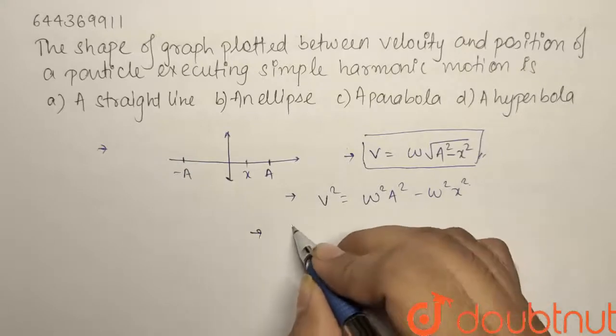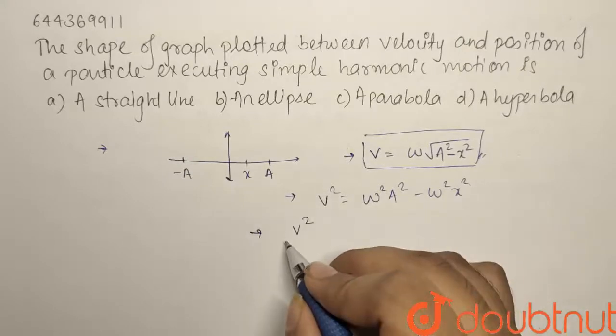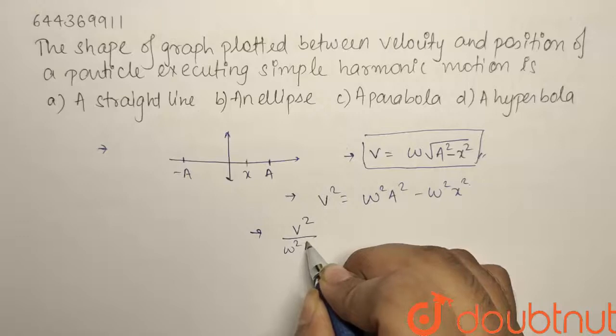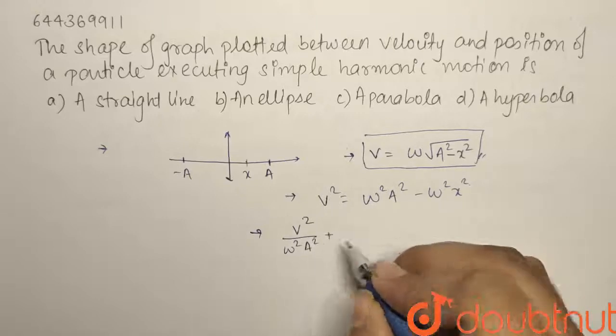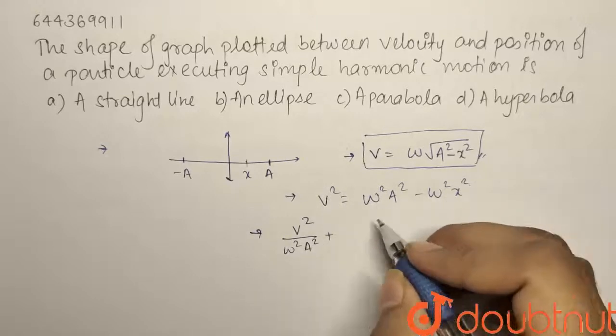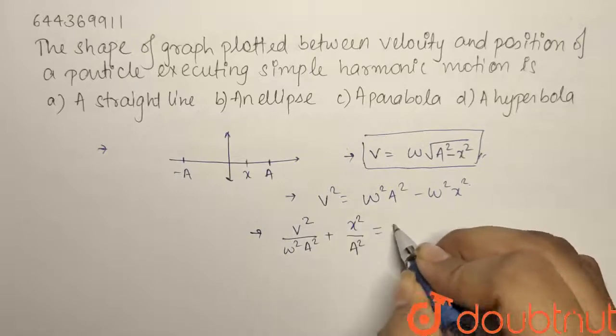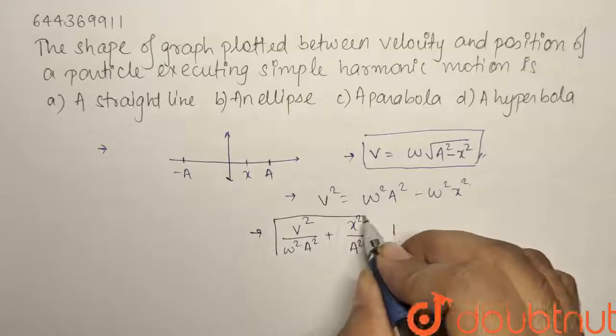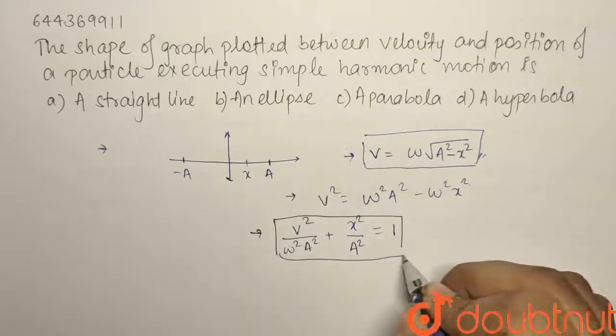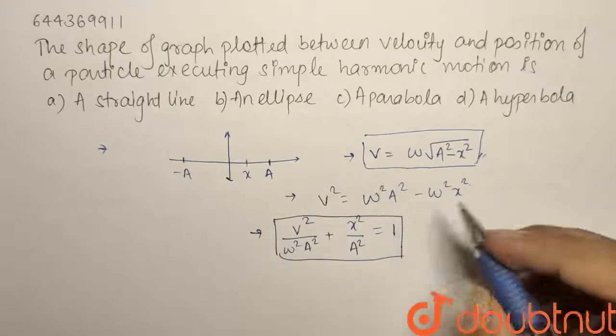the equation will turn out in such a way that it will become v²/(ω²A²) + x²/A² = 1. So this is the equation or the relation between the velocity and the position of a particle.